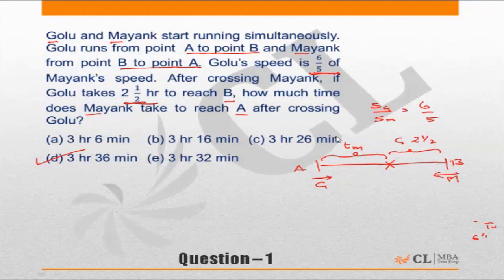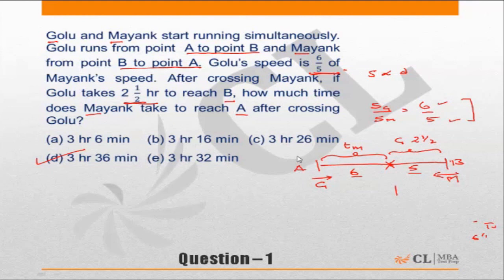Looking at the question again — when Golu and Mayang meet, what distance has each covered? Since speed is proportional to distance, and the ratio of speeds is 6:5, the distances covered are also in ratio 6:5. So the meeting point is 6 units from A and 5 units from B. Speed is also inversely proportional to time — we'll use both these facts.